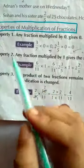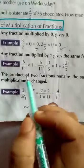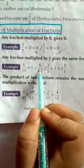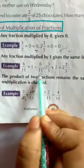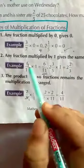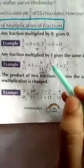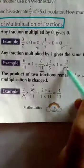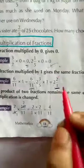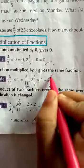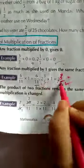Property number 2: any fraction multiplied by 1 gives the same fraction. Just as any number multiplied by 1 gives the same number, same way if we multiply any fraction with 1 we will get the same fraction. For example, 6/11 into 1 gives 6/11. Similarly, 2 and 3/5 multiplied by 1 gives the same — note there are some printing mistakes in the book but the result is the same fraction.